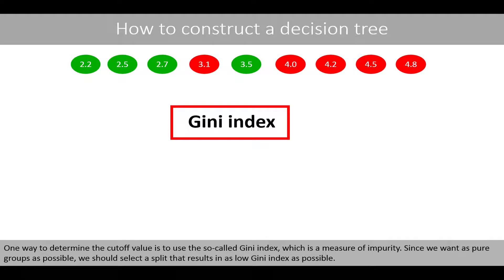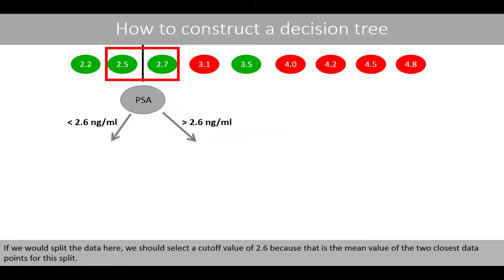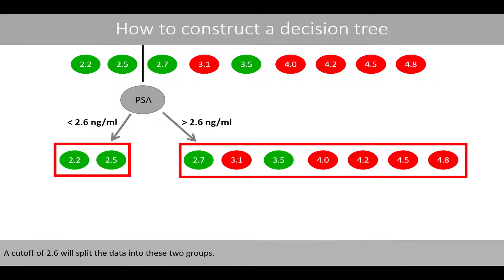One way to determine the cutoff value is to use the so-called Gini index, which is a measure of impurity. Since we want as pure groups as possible, we should select to split the results in as low a Gini index as possible. If we would split the data at a cutoff value of 2.6, because that is the mean value of the two closest data points for this split, a cutoff of 2.6 would split the data into these two groups.